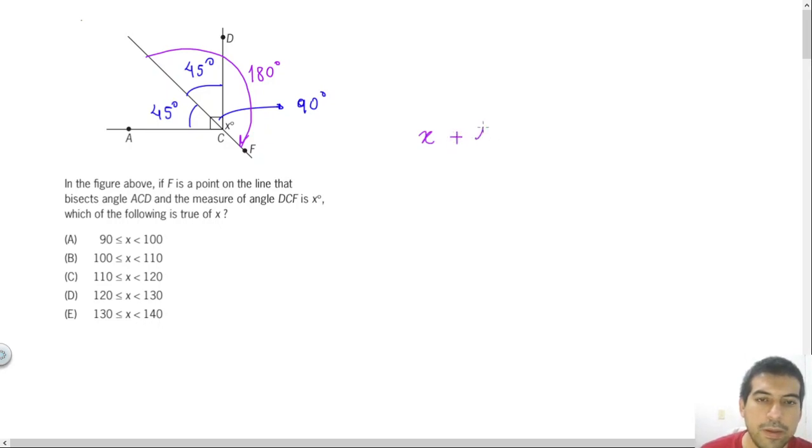So x plus 45 will equal 180 degrees, so x will be 180, I will send this 45 to the right side of the equation, it will become minus 45. 180 minus 45 equals 135.